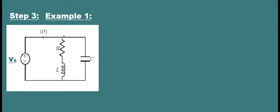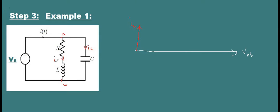Now let's move on to Step 3. In this example, we take the branch voltage as VAB, using VAB as the reference voltage. For the capacitive branch, the current IC leads VAB by 90 degrees. In the other branch, the current I2 — since the branch is not purely inductive — will lag by somewhere between 0 and 90 degrees, not exactly 90 degrees.